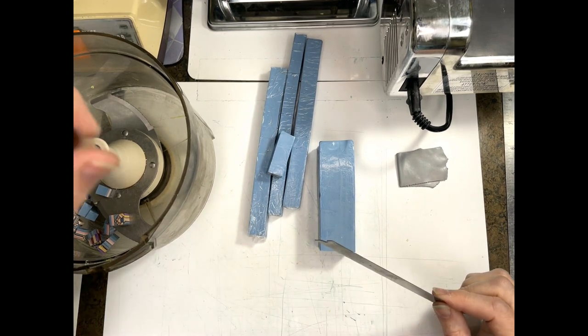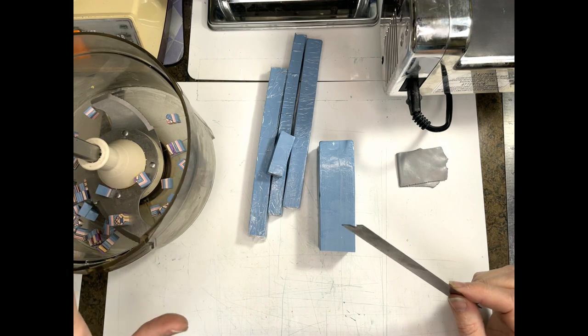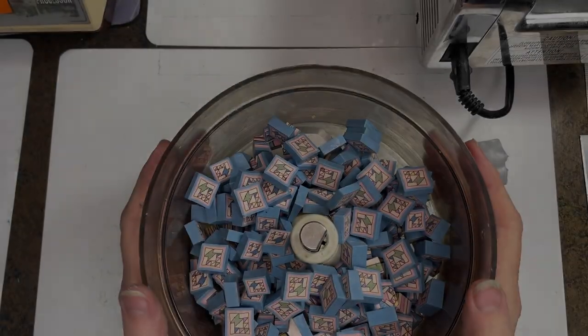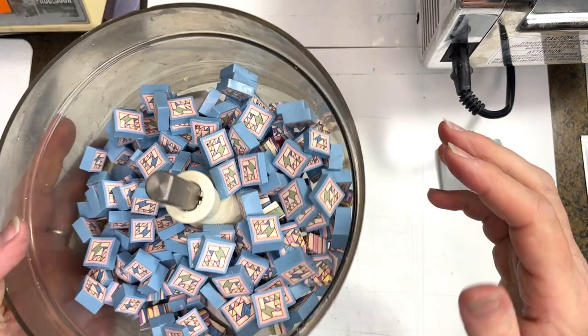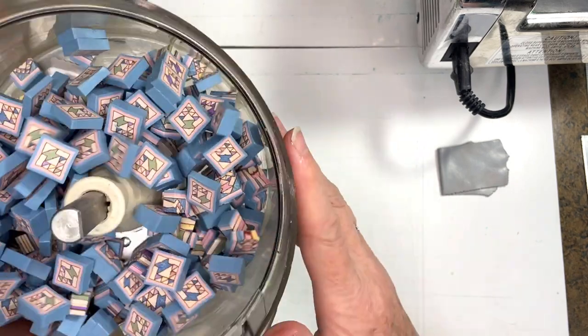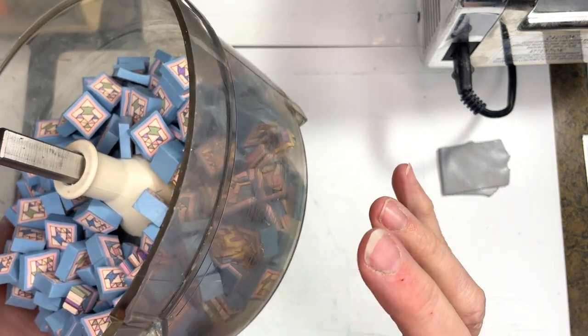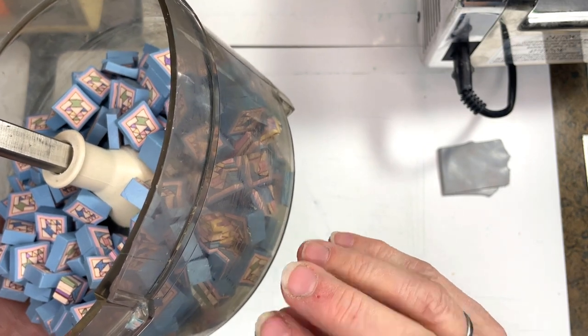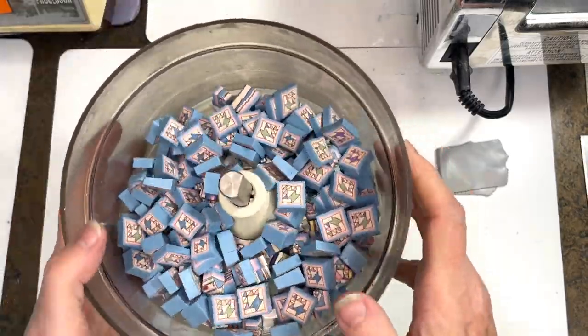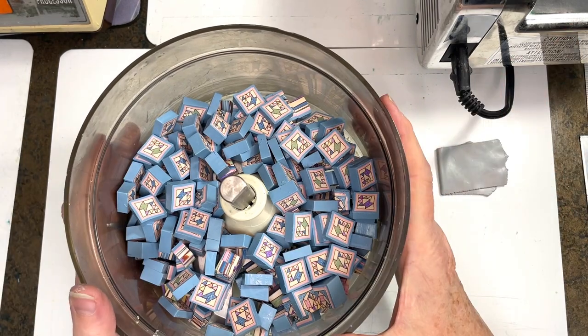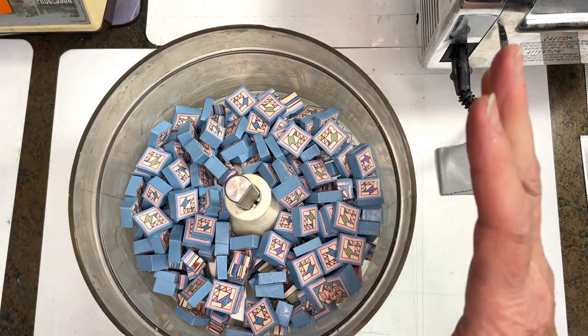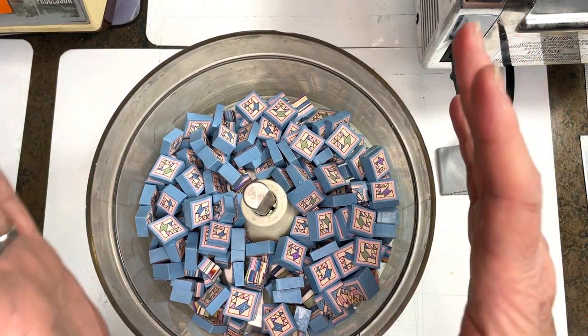Once I have this all chopped and put into the food processor bowl, I will start processing it. So here's my bowl. All my canes are all chopped up in there. You can see that it's approximately a third to half full. Don't want it too full because then the blade heats up and it just has a hard time circulating all the cane or the clay around and properly distributing all the colors and everything in there. So I'm going to put this onto my machine and I'm going to process it for the first stage.